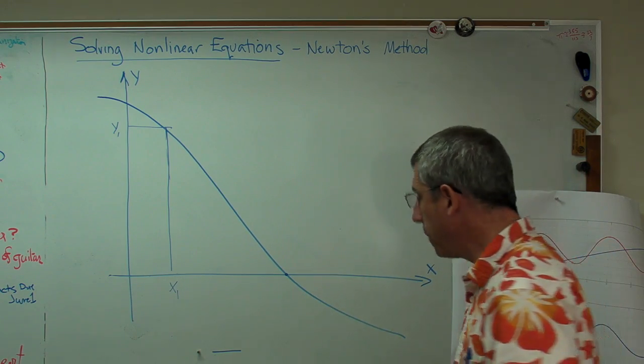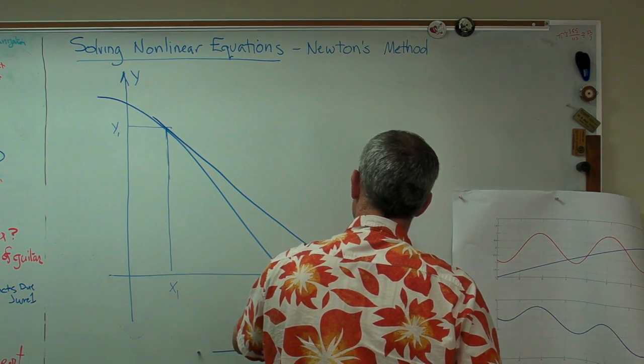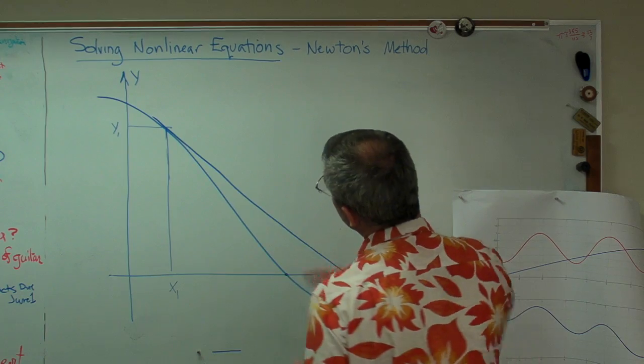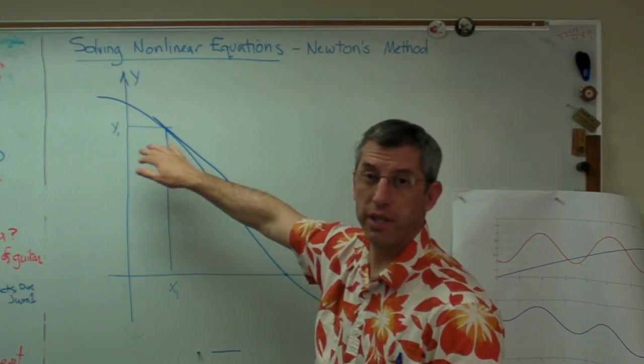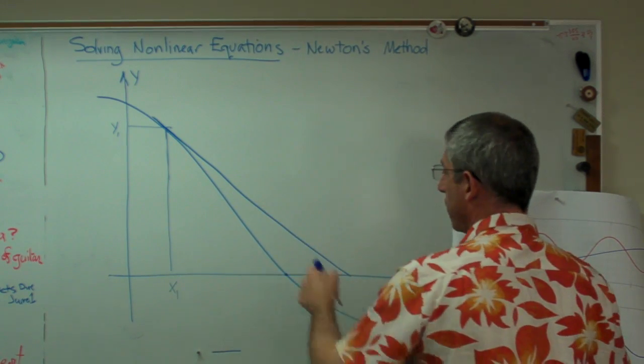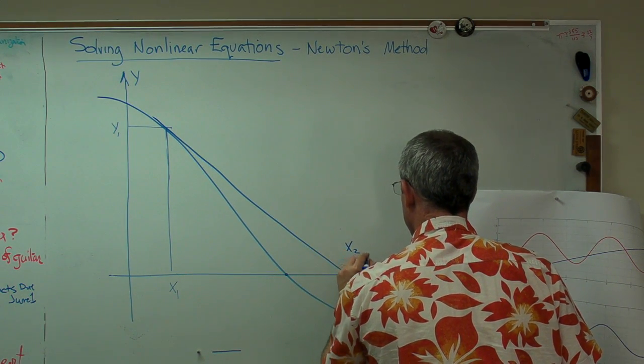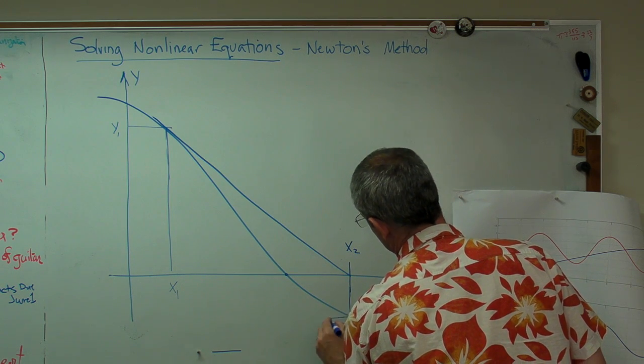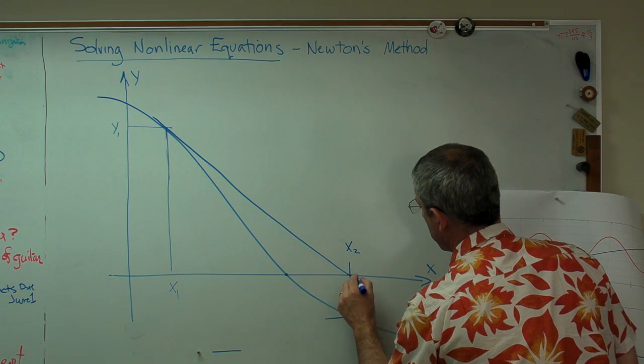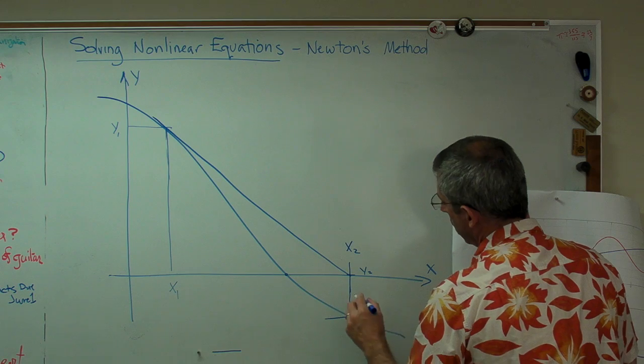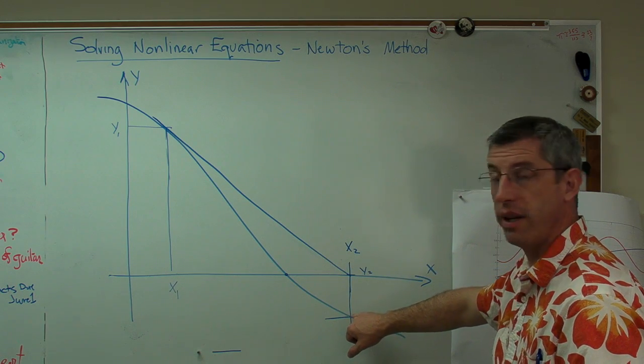We're going to calculate the slope at y1, and we're going to extend that all the way down to here. This is a straight line. It's tangent to that point. If you're into Taylor series approximations, this is a first order Taylor series approximation. So this is going to be x2, and that's going to be y2. This and this don't match each other. This is an approximate root, not exactly the root.